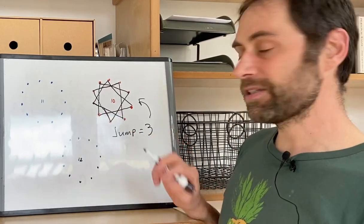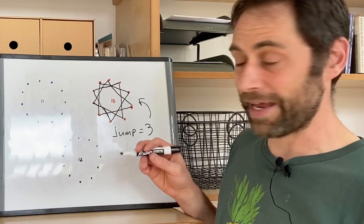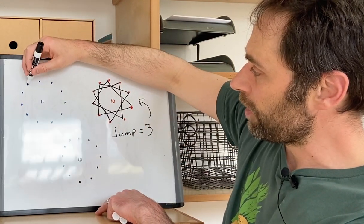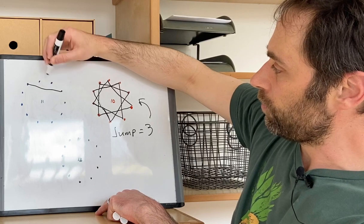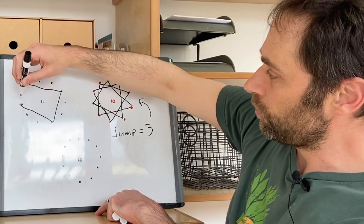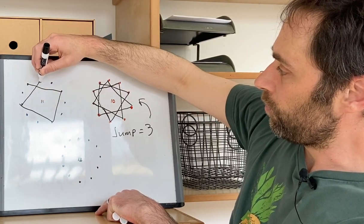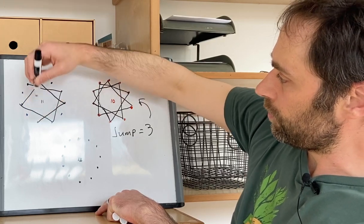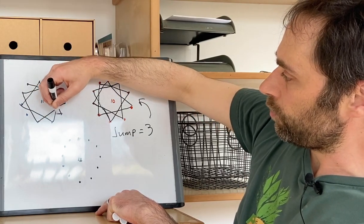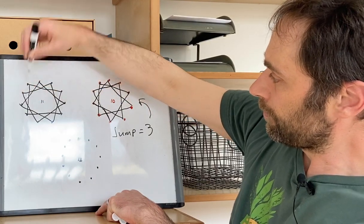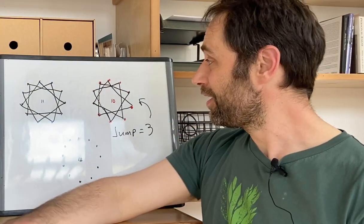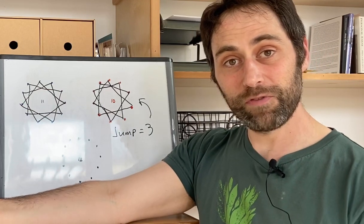Let's try 11 dots with a jump rule of 3 again and see what happens. So I'll pick a dot and go to every third dot: 1, 2, 3, and I just keep doing that same jump rule. Again, a star polygon, similar to the other one — hits everything. Very nice.